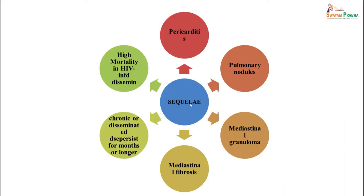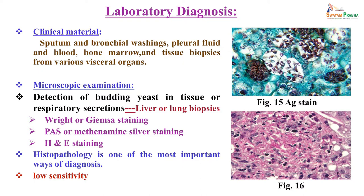Sequelae of histoplasmosis include pulmonary nodules, mediastinitis, mediastinal granuloma, fibrosis, chronic disseminated disease, and high mortality in immunocompromised and HIV-infected patients. For diagnosis, samples are collected from sputum, bronchial washings, pleural fluid, blood, bone marrow, and tissue biopsies. Being a dimorphic fungus, it appears as yeast forms in macrophages in human tissue at 37°C, best demonstrated by histopathological staining. Histopathology is one of the most important diagnostic tests.